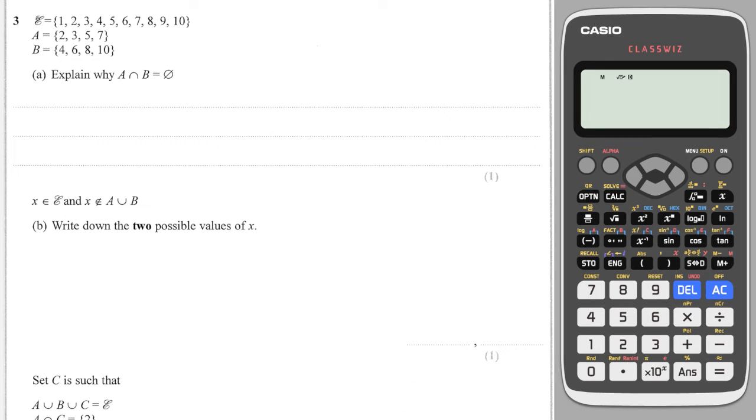Okay, next question. And we have a universal set here. So be very careful, we can only select from these numbers from 1 to 10. And this is explain why the intersection between A and B is empty. Well, that's because there are no elements in both A and B. And then this says that X is in the universal set, so it's a number between 1 and 10. And X is not in the union of A or B. So it's not in A or B. So what could X be? It's not in A or B, but it is in the yellow numbers. So the numbers it could be are 1 and 9.